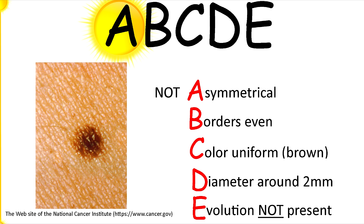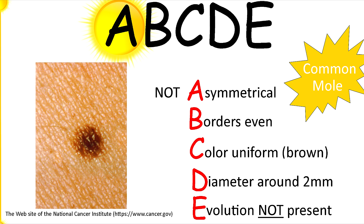The color is nice and uniform — we see one color and it's brown. The diameter is not greater than six millimeters; it's around two millimeters, which is good. And evolution is not present — it hasn't changed in its size, shape, or color. Therefore, we would determine that this is a common mole.